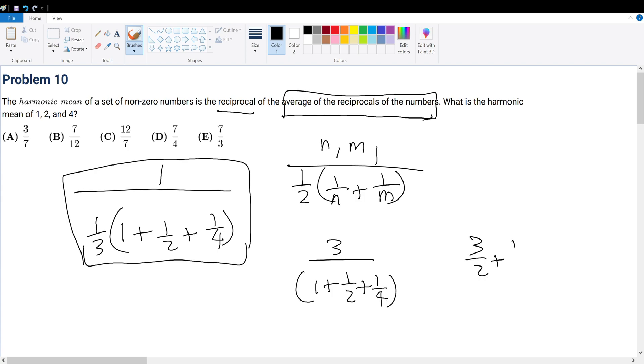Well, that's 3 over 2 plus 1 over 4, which gives me 7 over 4. So it's 3 times 4 over 7, so that gives me 12 over 7, so that choice would be answer choice C, and we are done.